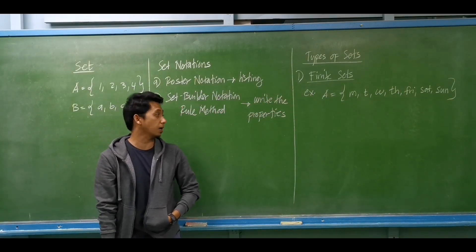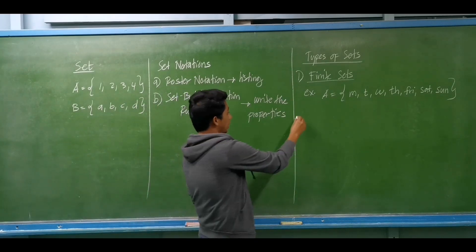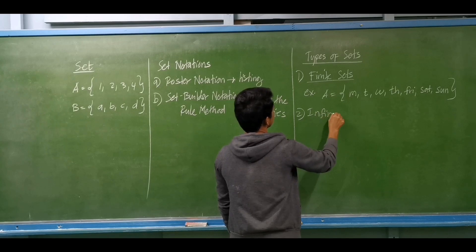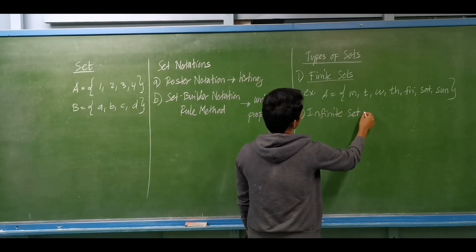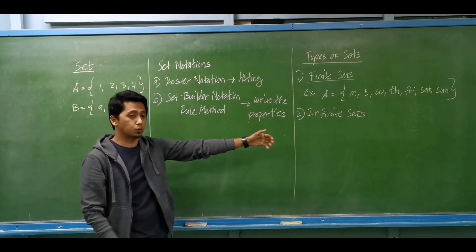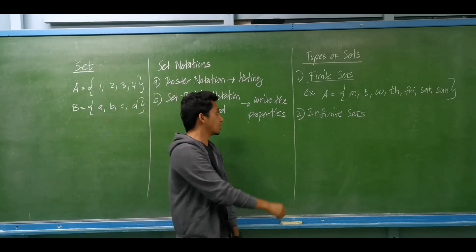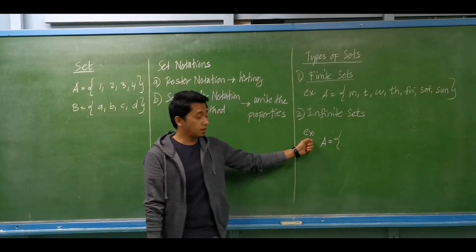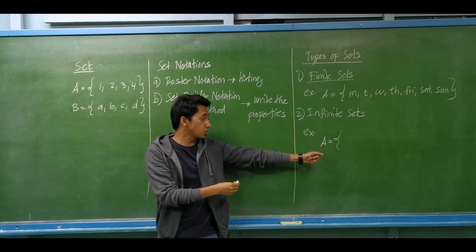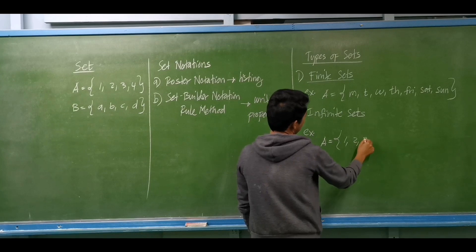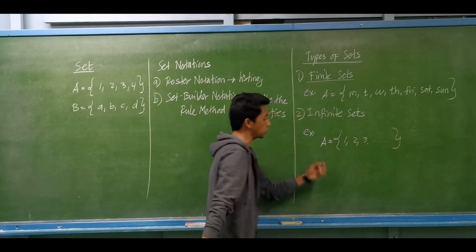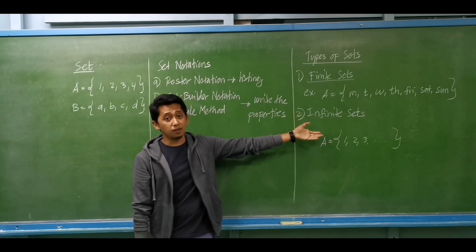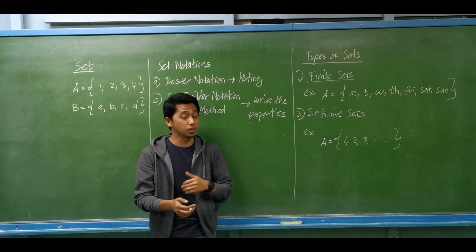The next type is number two, the opposite of finite set — that is the infinite set. For infinite sets, we may know the first element, but we will never know what is the last element. For example, set A has elements of all positive integers: positive 1, positive 2, positive 3, up to an infinite positive integer. We don't know exactly what is the last positive integer. That is an example of an infinite set — we may know the first element, but we will never know what is the last element.